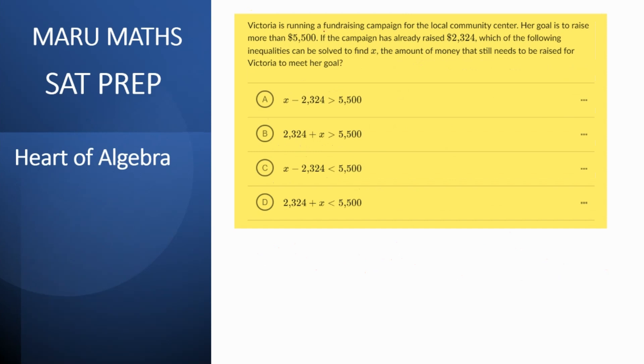Now the next question is Victoria is running a fundraiser, we've all been there, and her goal is to raise more than five thousand five hundred. So in these inequality questions, if it's more than a certain value just say whatever something has to be greater than 5500 and the campaign has already raised 2324 dollars, then which of these is to find the amount of money that still needs to be raised. So if x is the amount that still needs to be raised, this plus 2324 should be greater than 5500. So let's take a look at which of these options. In this case she just wants more so we don't even need the equal to sign. So our answer should be option b over here.